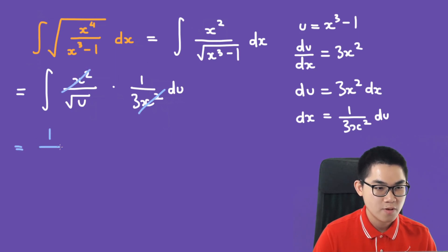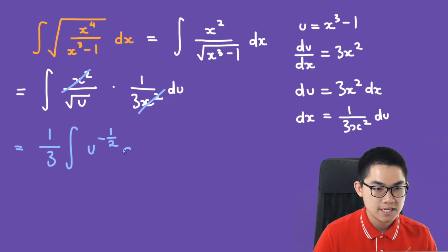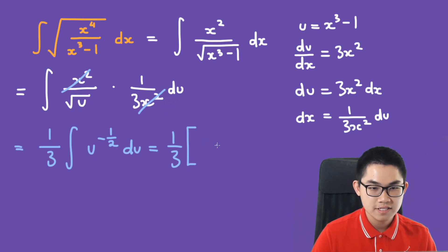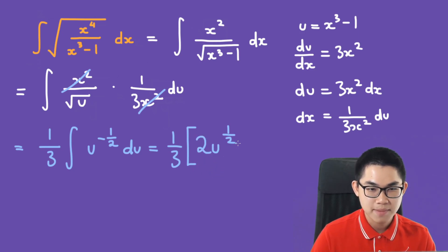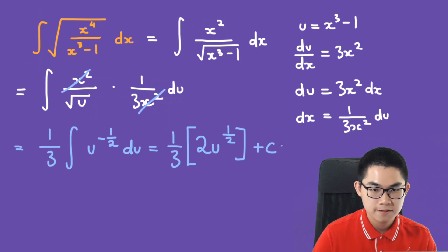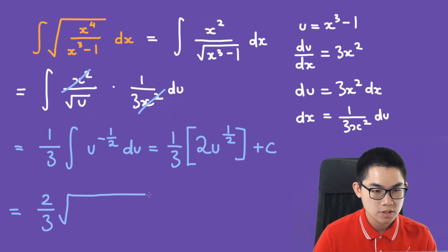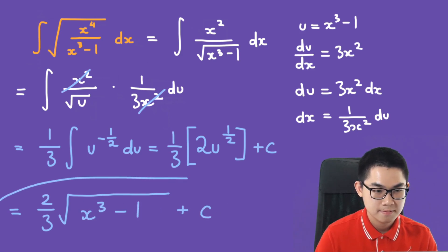We bring the constant out front. We have 1 over 3 times the integral of u to the power of negative 1 over 2 du. The antiderivative is u to the power of positive 1 over 2 divided by positive 1 over 2, which is the same as multiplying by 2, plus C. This equals 1 over 3 times 2, which is 2 over 3, times the square root of u. Substituting back, the square root of u is the square root of x to the power of 3 minus 1, giving a final answer of 2 over 3 times the square root of x cubed minus 1, plus C.